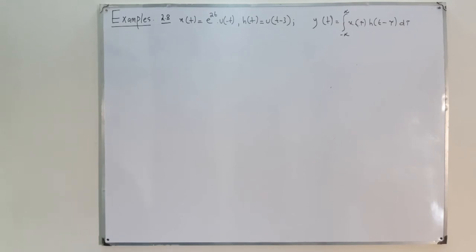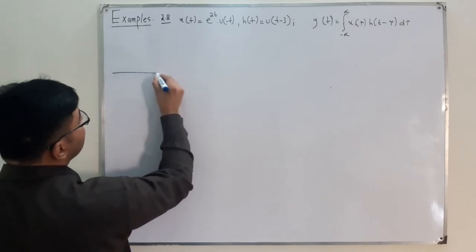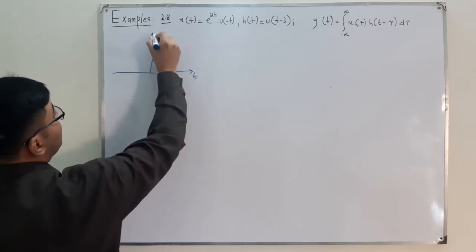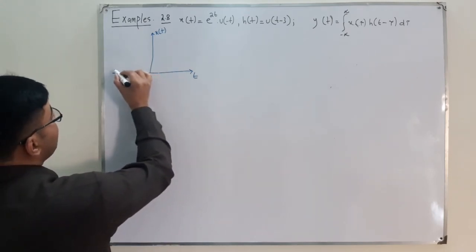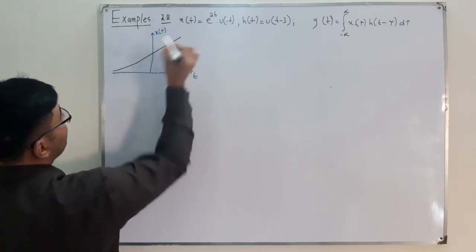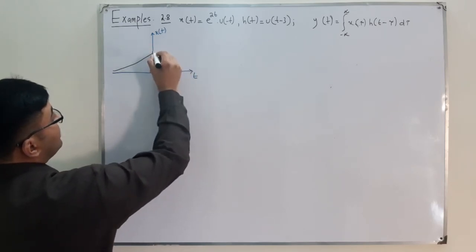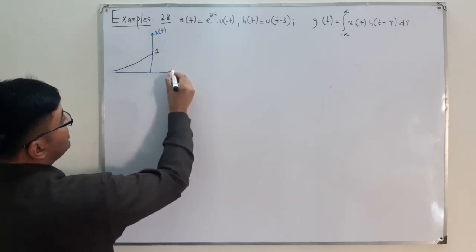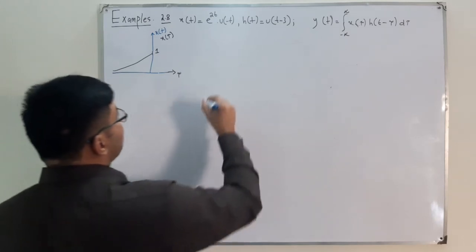Let's draw the graphs. x(t) = e^(2t) · u(-t): e^(2t) is a rising exponential, but multiplied by u(-t), so the positive portion is clipped. The value at t = 0 is 1. x(τ) looks the same on the τ axis. Then h(t) = u(t - 3) is the unit step shifted 3 units to the right, so it starts at t = 3 with value 1.